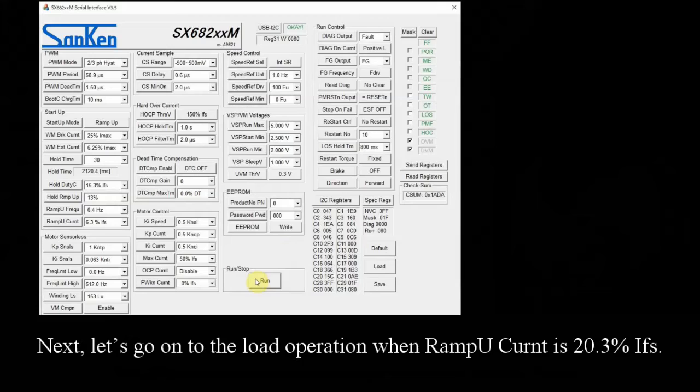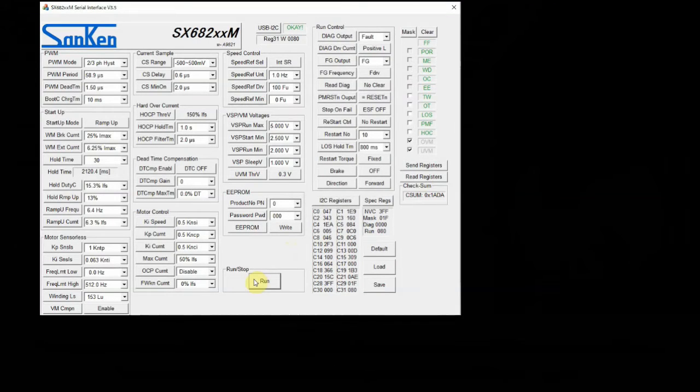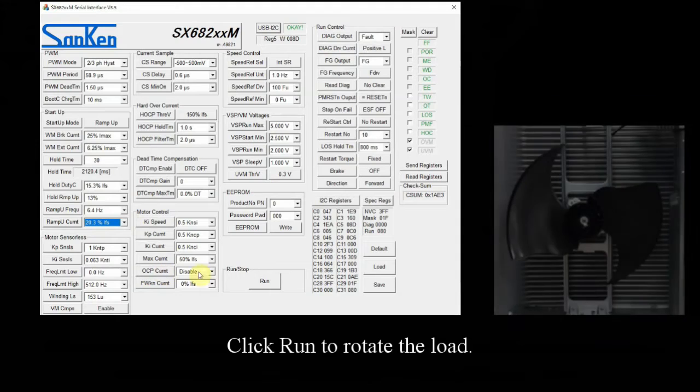Next, let's go on to the load operation when ramp up current is 20.3% IFS. In this case, the phase current is maximum current range IFS times 0.203. Click run to rotate the load.